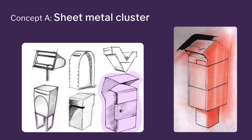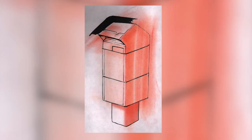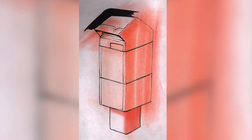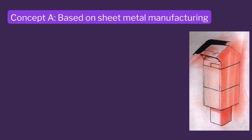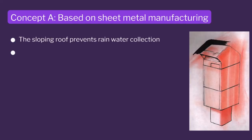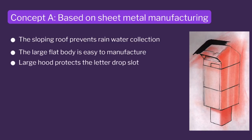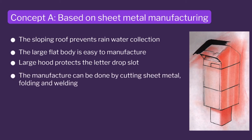The concept has a sloping roof so water will not stay. It has a large flat body for easy manufacturing. It has a large hood that helps protect letters when you are dropping them inside. The manufacturing can be done by cutting sheet metal or stainless steel and folding them, welding only the corners — a much better design overall.